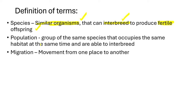For example, if we have a group of cows — they are similar, they can interbreed, meaning they can produce offspring — and then those offspring that are produced will be able to continue reproducing as well. That is what we mean by fertile offspring.